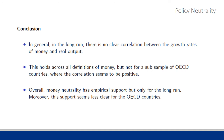To sum up: in general, in the long run there is no clear correlation between growth rates of money and real output, which supports the rational expectations hypothesis. This holds across all definitions of money, but not for the subsample of OECD countries given the McCandless and Weber study, where there is a strong positive relationship. There is empirical support for rational expectations, but really more only in the long run — as we would expect, long-run output would be unaffected by movements in money once prices have adjusted. This support seems less clear for OECD countries, which support the Keynesian proposition.